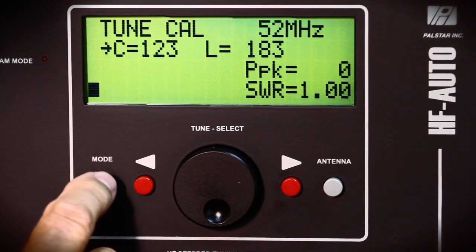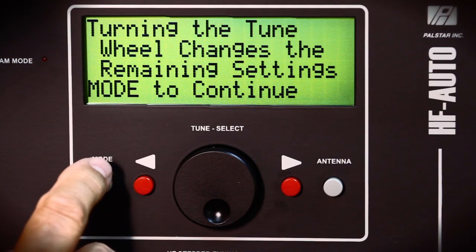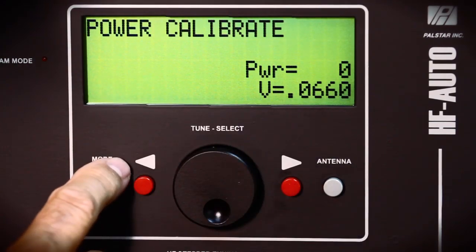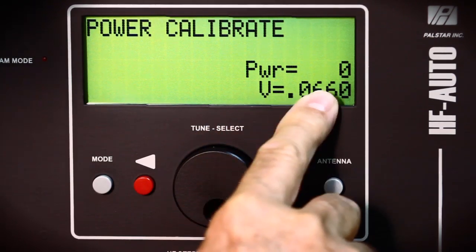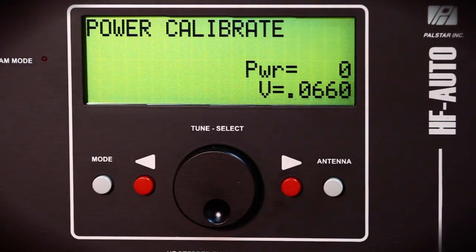And then push the mode button until you get into the output power adjustment. You have to go through the three frequencies. And as soon as you go to the next part, it says power equals zero. And that says power calibrate. That's the only menu we are interested in modifying.